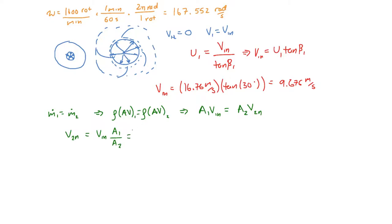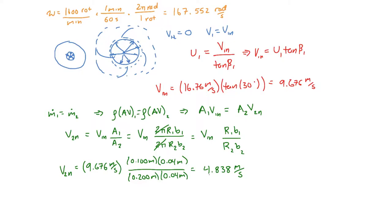Now a1 and a2 are based on the blade width and basically the perimeter of the inlet. So we could say that this is simply 2 pi r1 b1 divided by 2 pi r2 b2. That's the cross-sectional areas at the inlet and outlet. The 2 pi actually cancel. So then we have a very simple equation. This is v1 normal r1 b1 divided by r2 b2. We just have to plug in these numbers and get the normal component for the outlet. What we get for the normal component at the outlet is 4.838 meters per second.